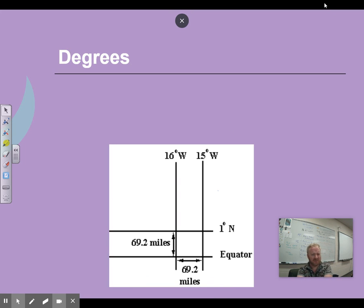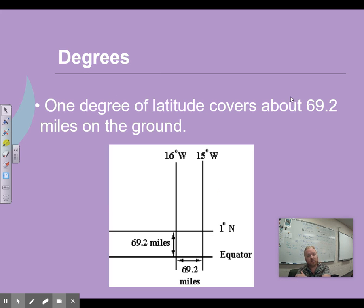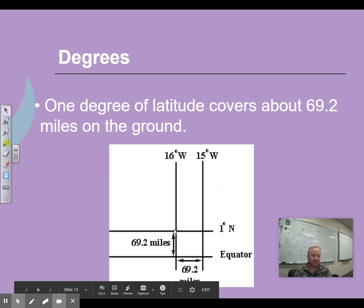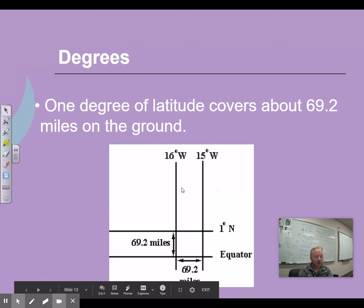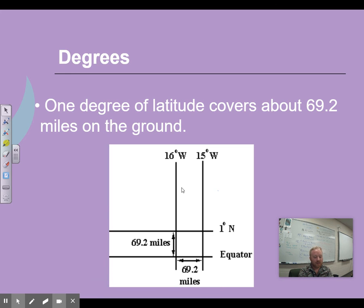Degrees — we're 39 degrees from the equator. Does that mean 39 hours? No. One degree of latitude covers about 69.2 miles on the ground. So going from one degree to the next degree is 69.2 miles. If you figure zero degrees from the equator and Denver is 39 degrees north, that makes sense.